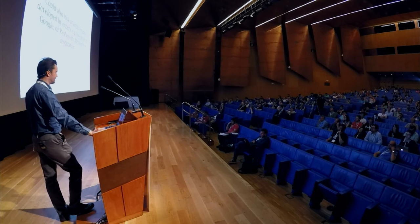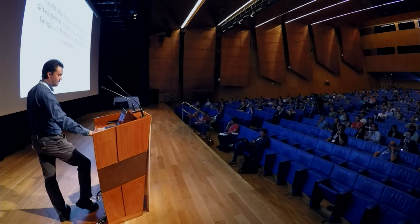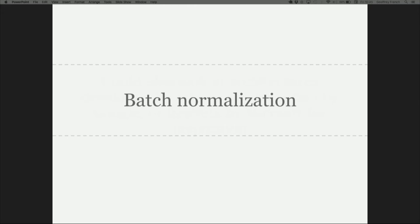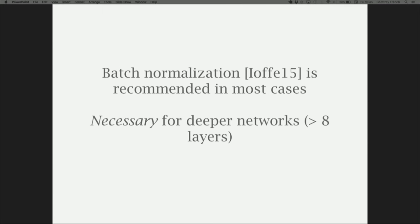Overall, your convolutional layers detect features throughout the image, and your fully connected layers pull that information together to produce the output. You could look at inception networks by Google or ResNets by Microsoft for architectural inspiration. On more complex topics: batch normalization is recommended in most cases — it makes things better and is necessary for deep networks. A deep neural network is simply a network of roughly more than four layers. For networks deeper than eight layers, you'll want batch normalization, otherwise they just won't train very well.